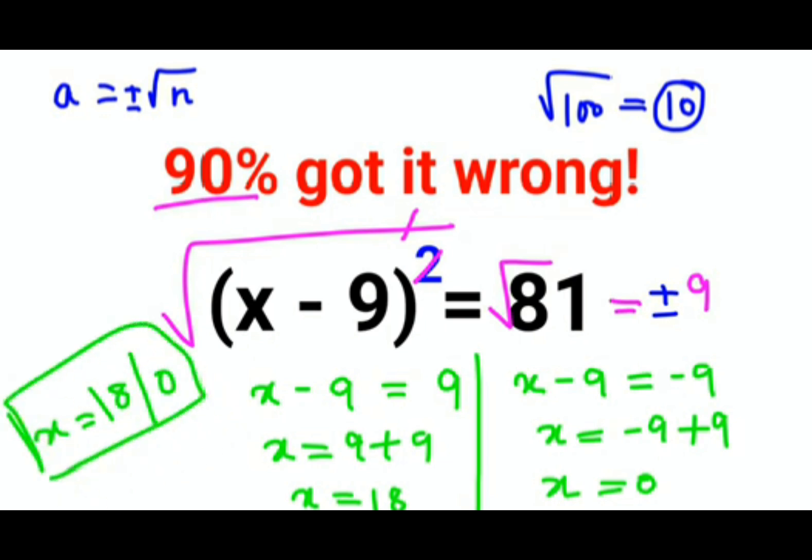Now if you put the value of x as 18, okay, if I put the value of x as 18, this becomes 18 - 9, which is 9, right. The square gets you 81. So this is correct.